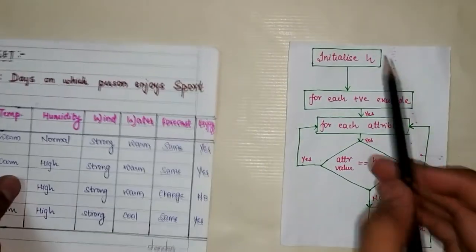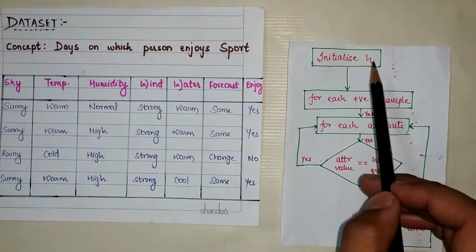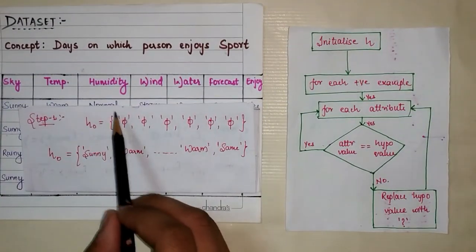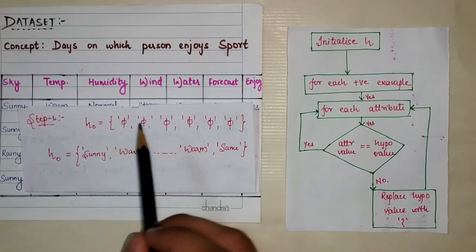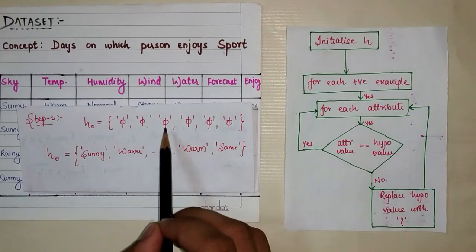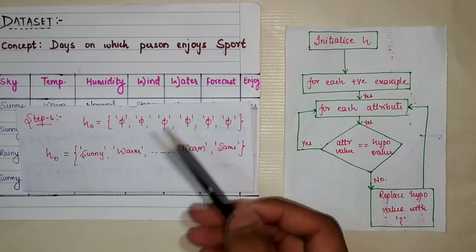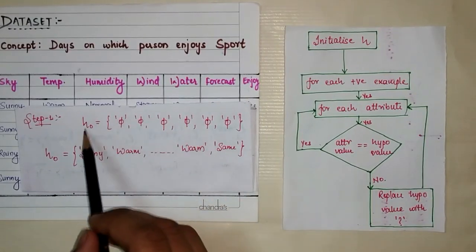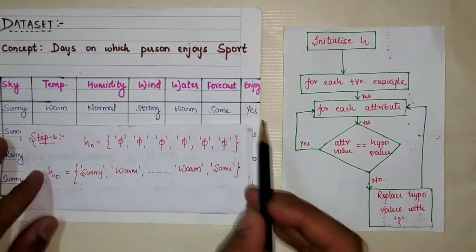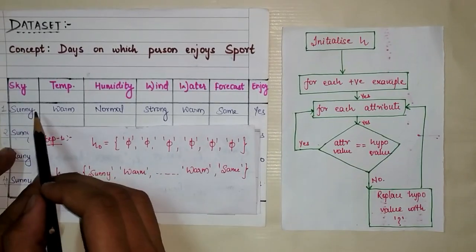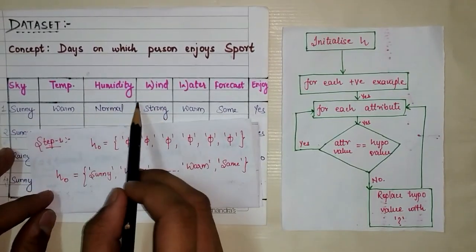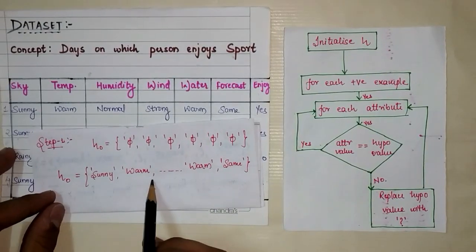The algorithm says first we initialize hypothesis h. So h0 is the most specific hypothesis. Since we cannot compare training instances with phi directly, we initialize the most specific hypothesis with the first positive instance. The first positive instance is: sunny, warm, normal, strong, warm, same.